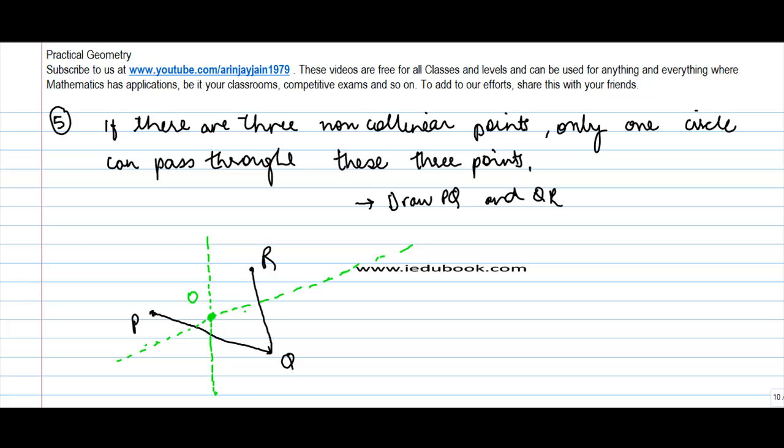Now if you recall, the property of perpendicular bisector of a particular line is that at every point on that perpendicular bisector, this point will be equidistant from Q and R. So what it means is that if you draw a line OP and OQ, OP will be equal to OQ. Why? Because equidistant from perpendicular bisector.